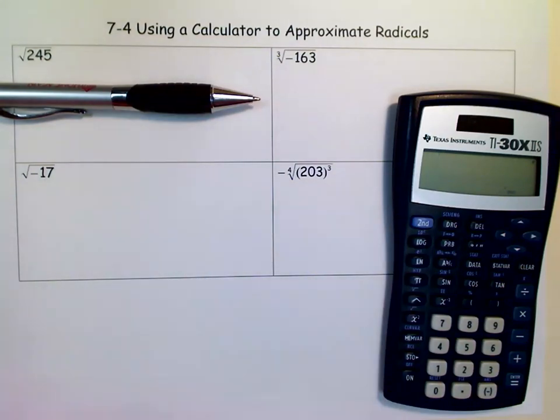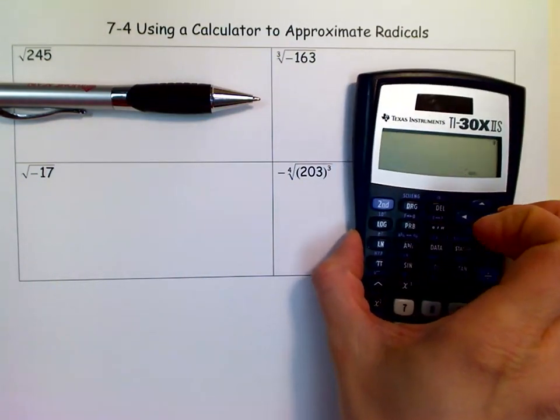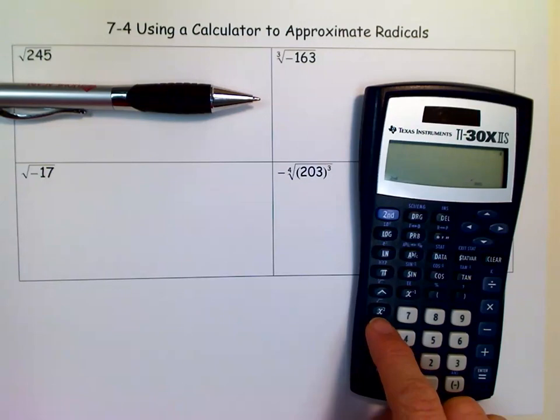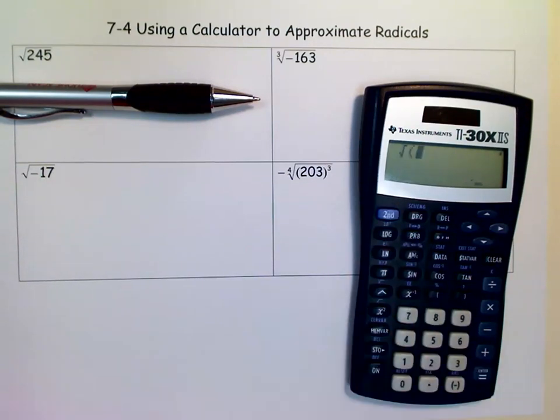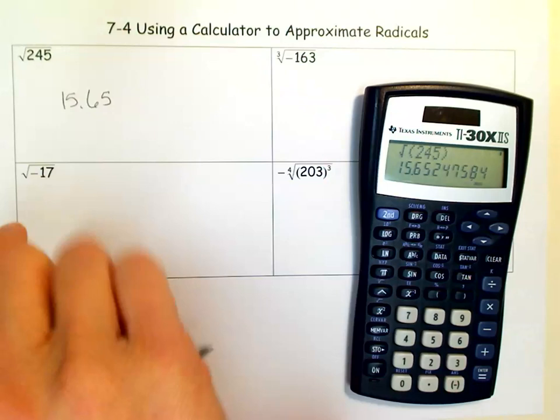The square root is pretty straightforward. You're going to use the square root button, which is the second function and then the x squared key on this kind of calculator. You put 245 down and press enter. You get 15.65, rounded to the nearest hundredth. I'd already done that one.